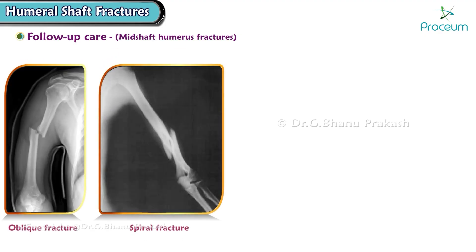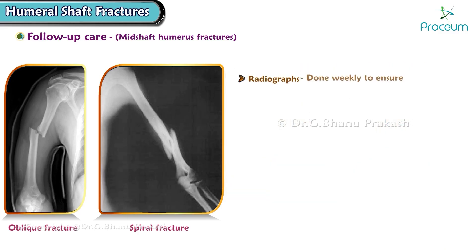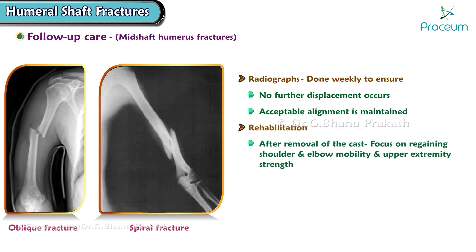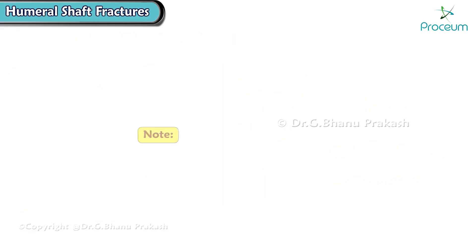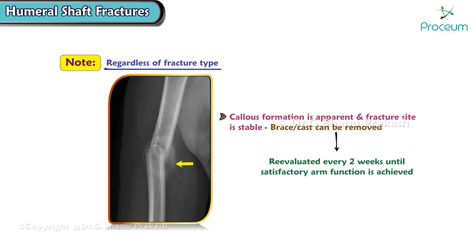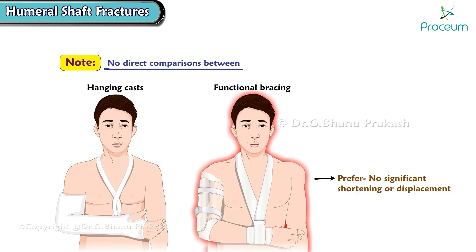Non-surgical patients with oblique or spiral humerus shaft fractures can be treated with a hanging cast or functional brace, especially if there is significant displacement or shortening. Radiographs should be done weekly to ensure no further displacement occurs and acceptable alignment is maintained. After cast removal, rehabilitation should focus on regaining shoulder and elbow mobility and upper extremity strength, with bi-weekly follow-ups recommended. Once callous formation is apparent and the fracture site is stable, the brace or cast can be removed, and the patient re-evaluated every two weeks until satisfactory arm function is achieved. Most experts prefer functional bracing if there is no significant shortening or displacement.